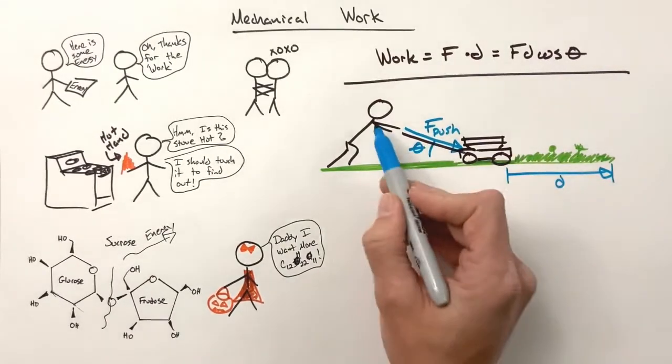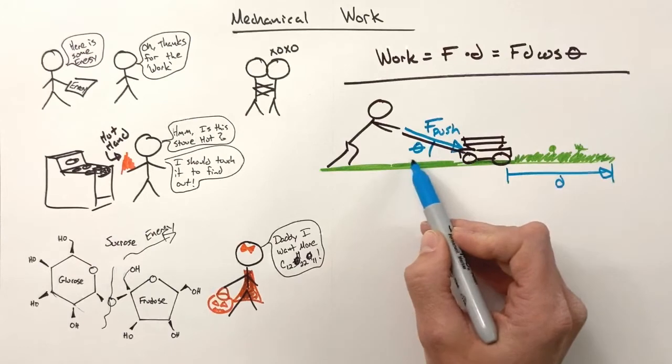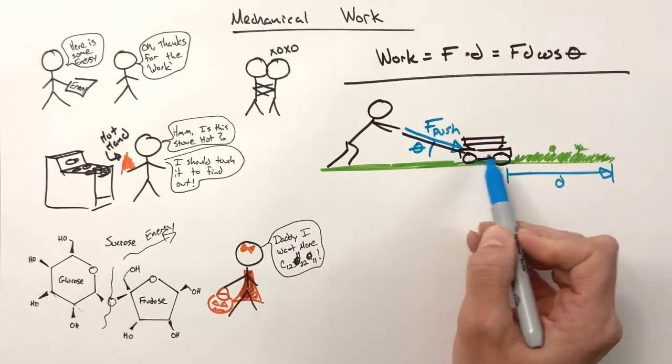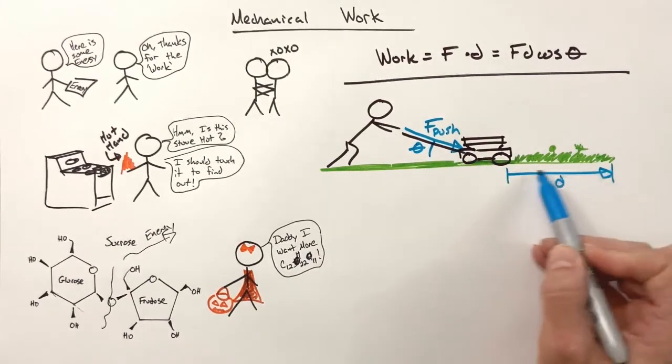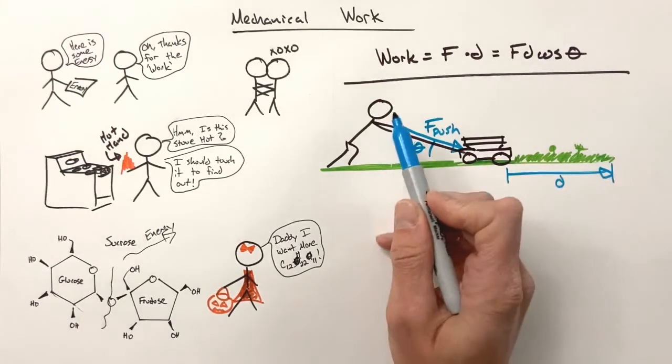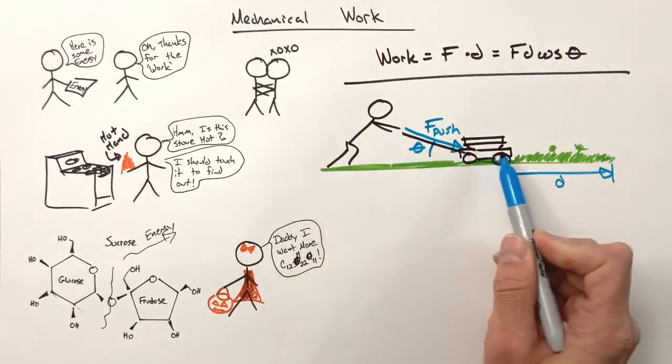If the lawnmower is pushed with some force F, at an angle theta relative to horizontal, a total displacement horizontally that is D, then there's energy transferred from me to the mower.